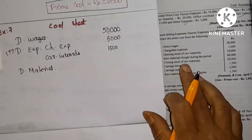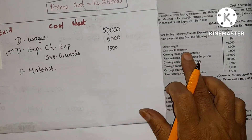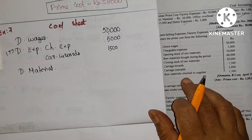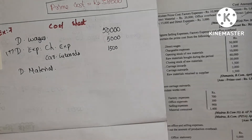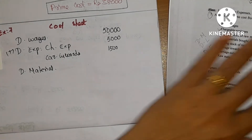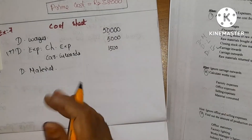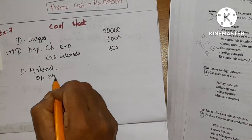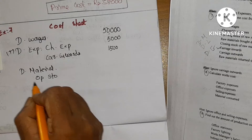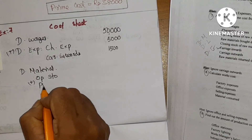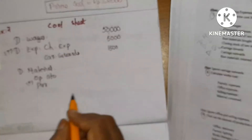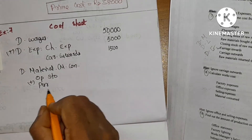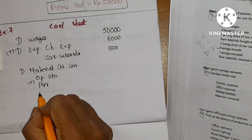For direct material, the information needed is opening stock, purchases, closing stock, and purchase returns. The formula is: opening stock plus purchases, then subtract closing stock and purchase returns, to get material consumed.